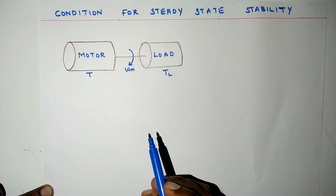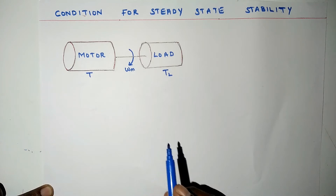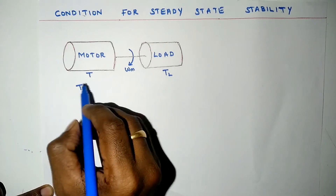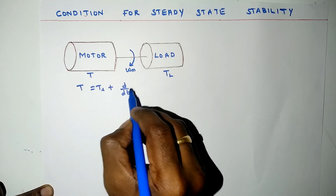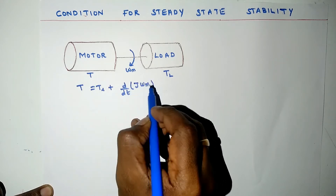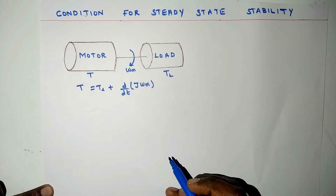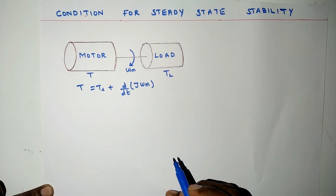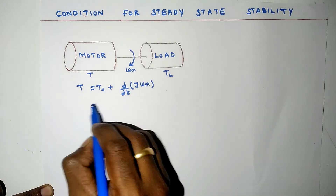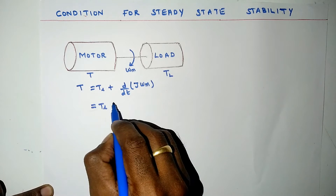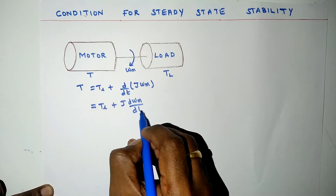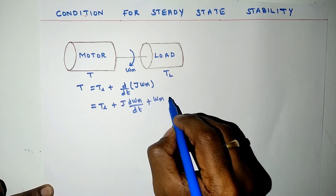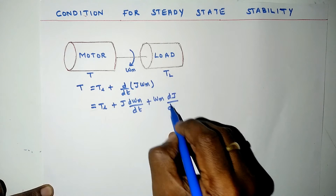For this system, the equation governing motor-load dynamics can be written as T = TL + d/dt(J * omega_m). This can be rewritten as T = TL + J * (d omega_m / dt) + omega_m * (dJ / dt).